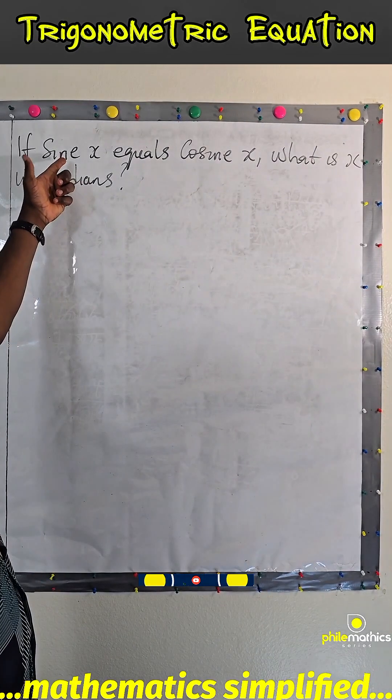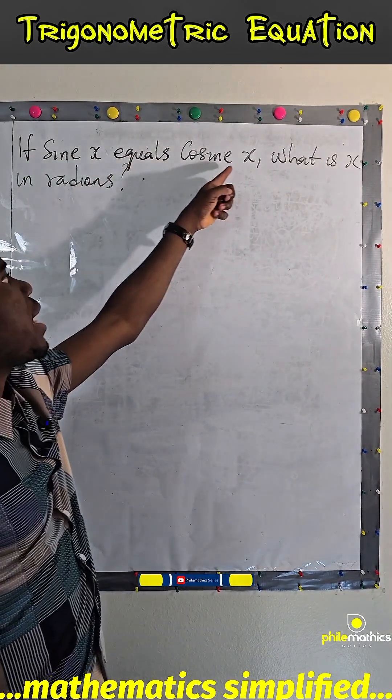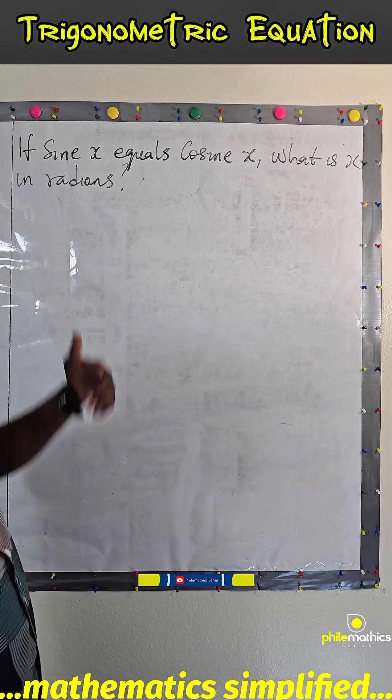We are told that if sine x equals cosine x, what is x in radians?